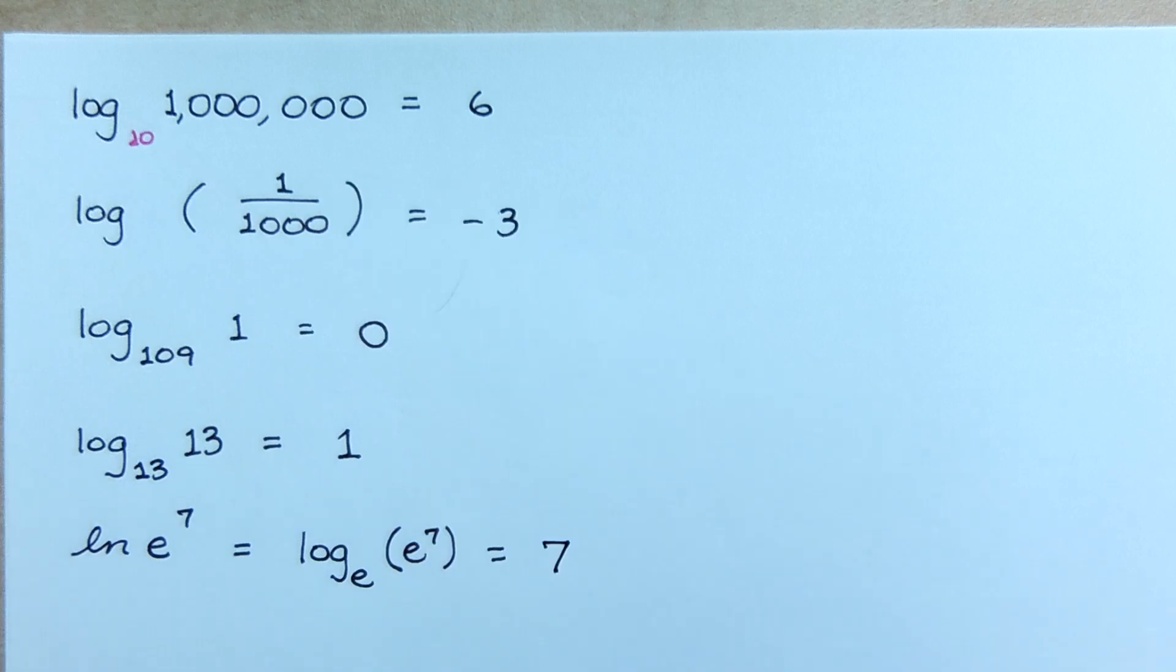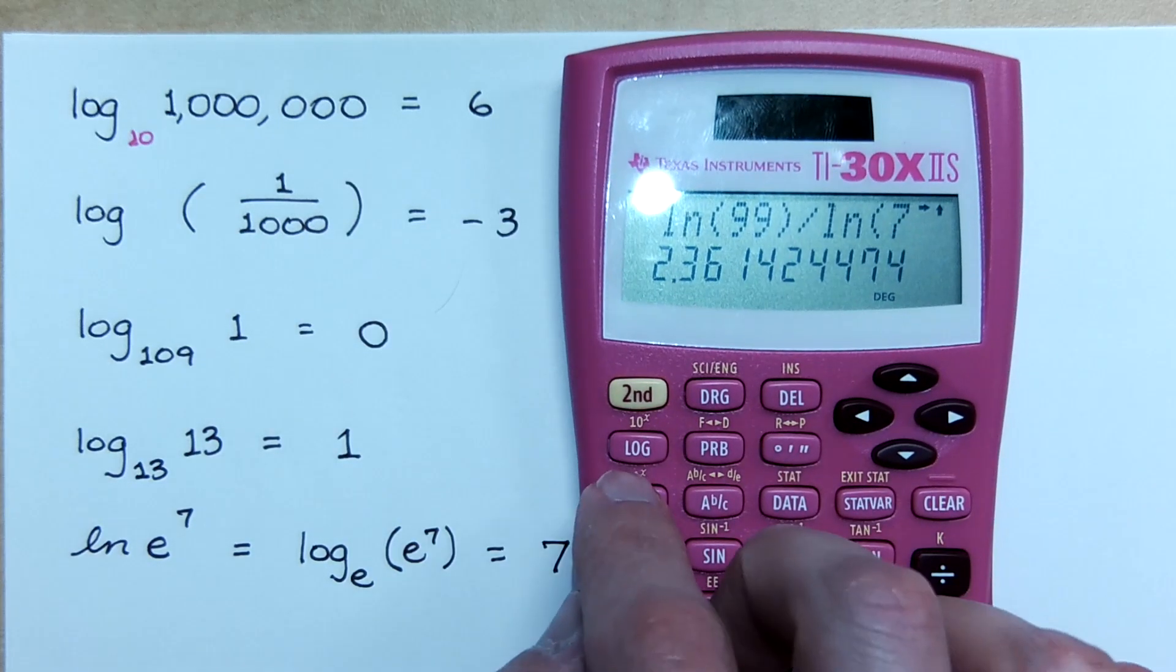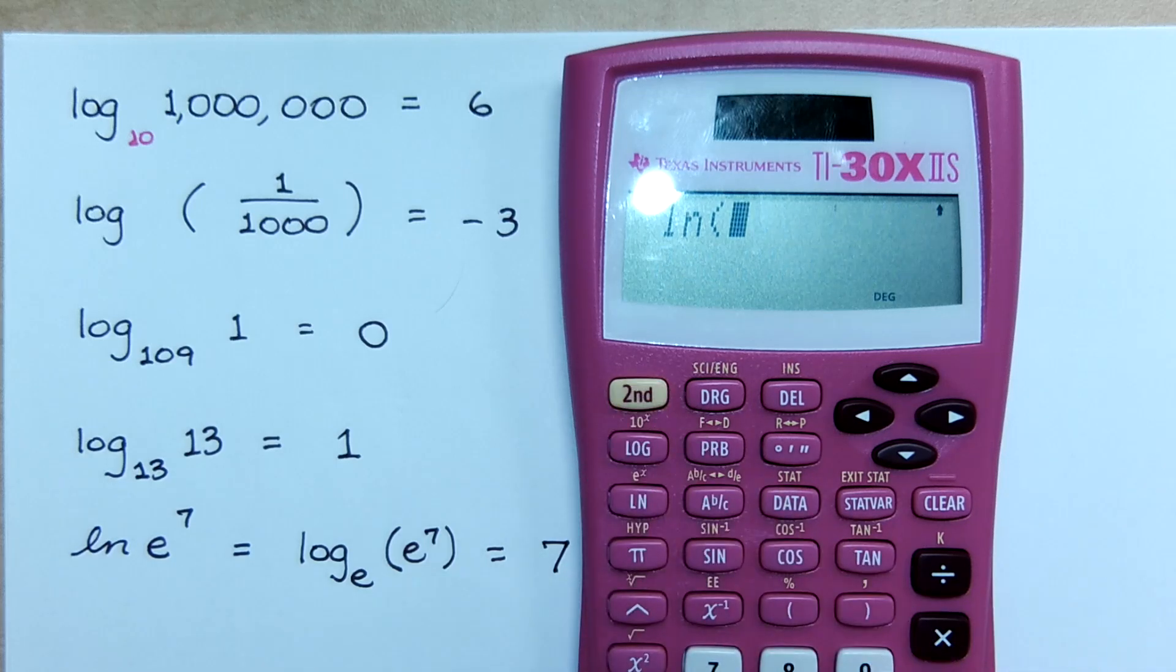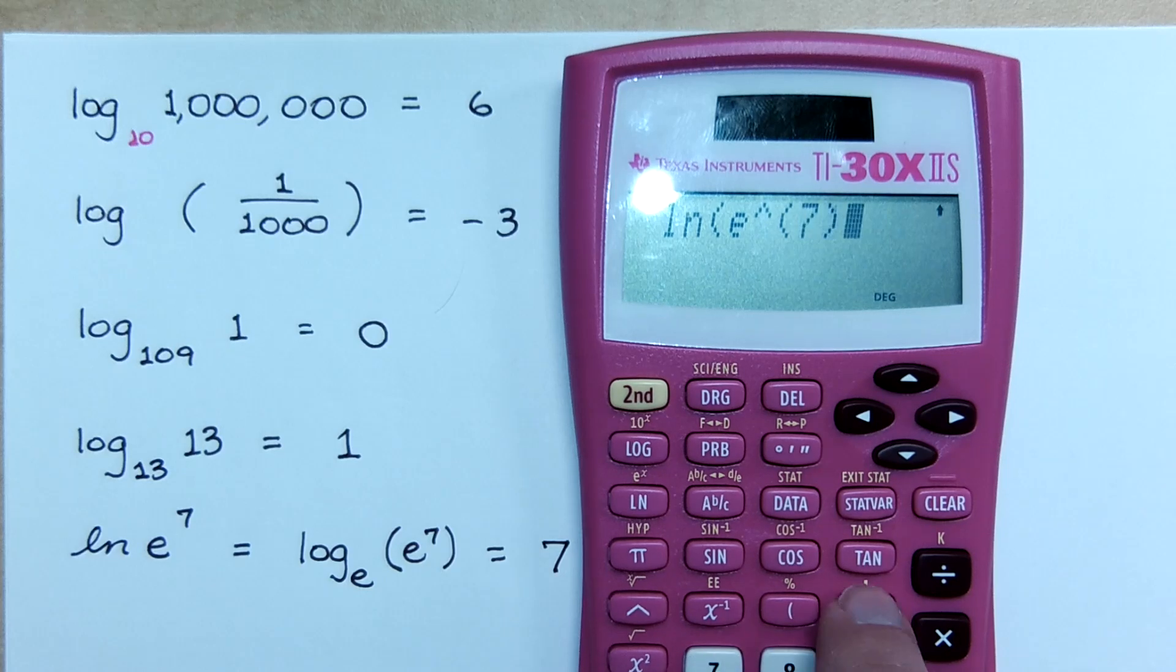You could even go to your calculator because I know you love your calculator. You love it so much, why don't you marry it? If I do natural log of E, so second, natural log E to the seventh, look what I get. I get seven, right? That's right. Mind equals blown.